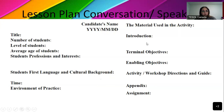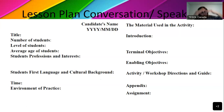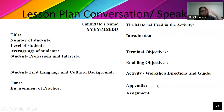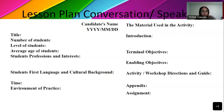Introduction: how do you start your class? You can talk about the warm-up here. Terminal objective: the main aim of the session — students will be able to do what? Enabling objective: what are the skills, the list of vocabulary, grammar, pronunciation, intonation — everything you need to teach your students to reach that terminal objective. Then you write the process: pre, while, post — the steps, interactions (solo, pair, whole class, group), and time (five minutes, two minutes, three minutes). Appendix is all the material you need. And what about the assignment? Follow-up activity.